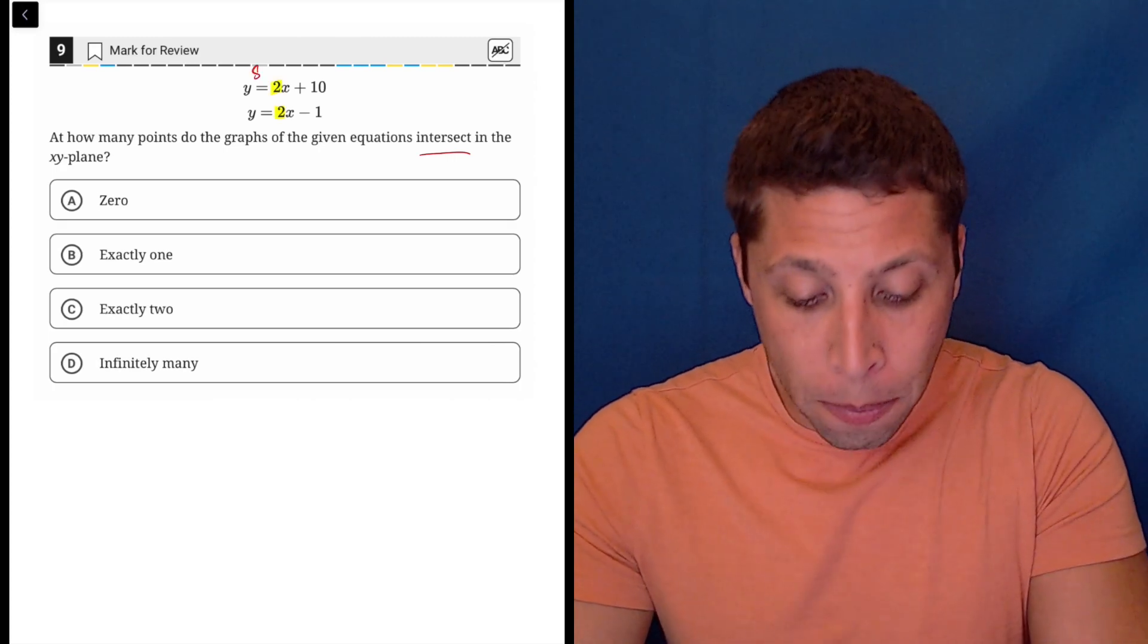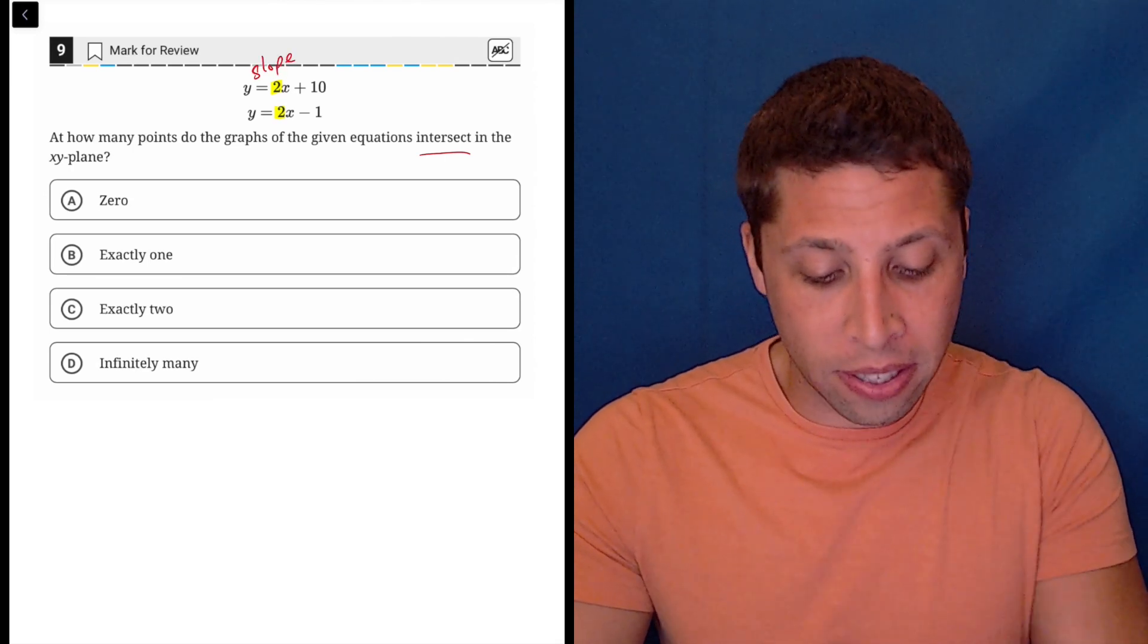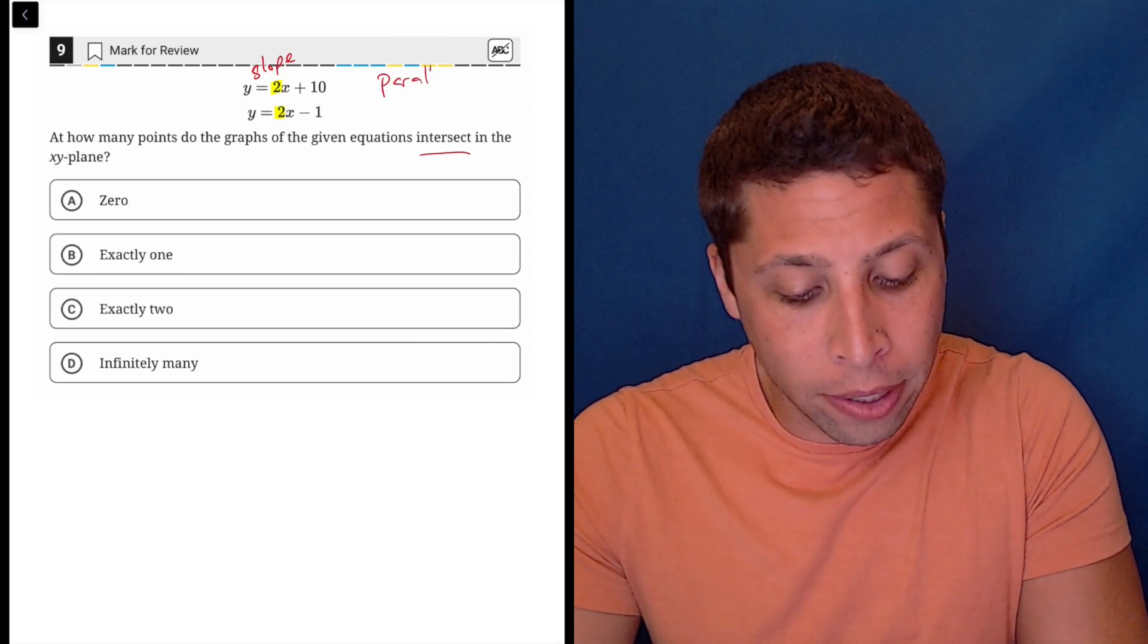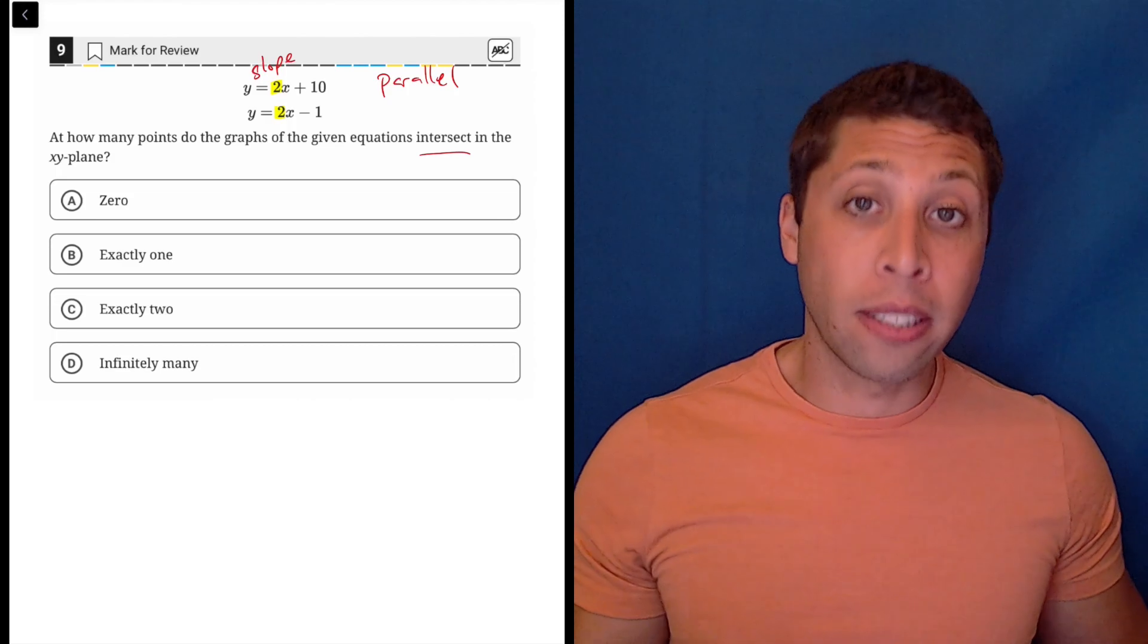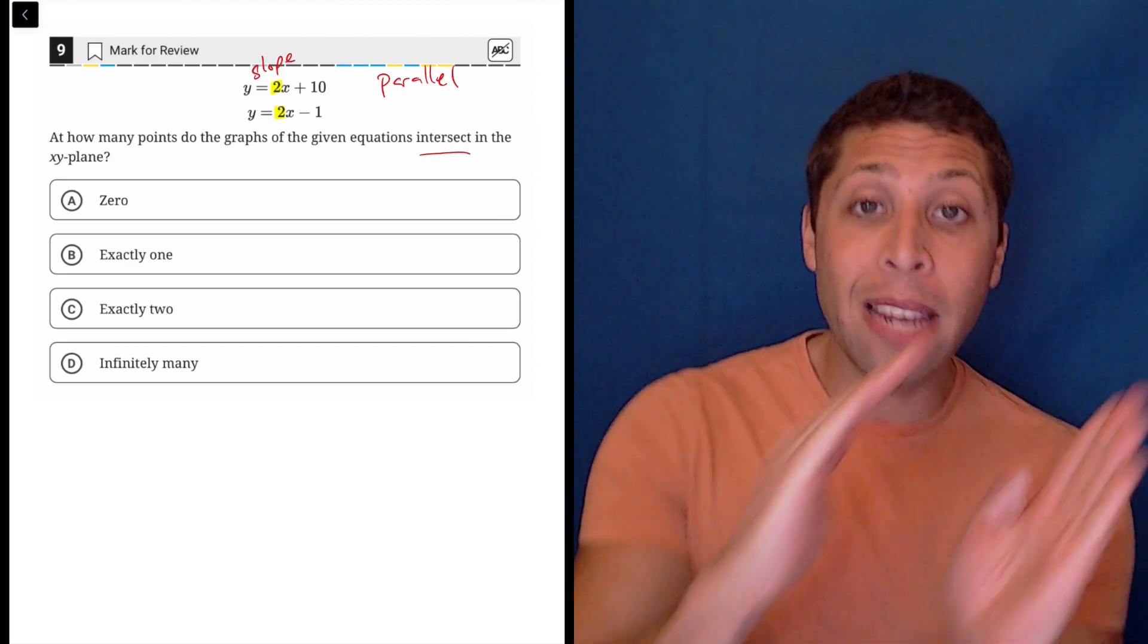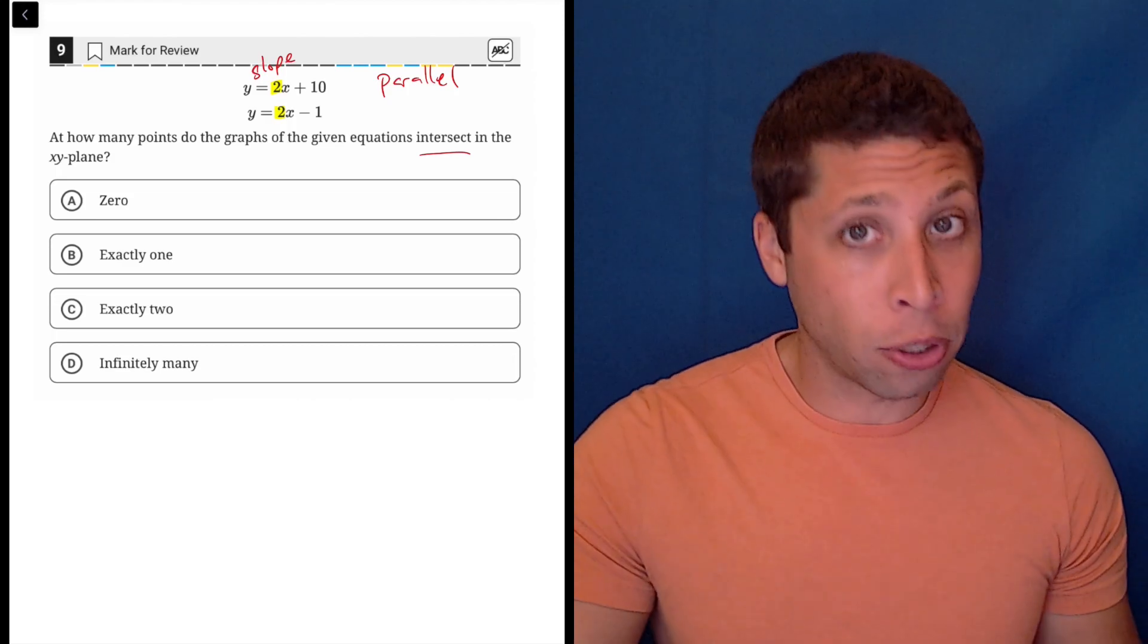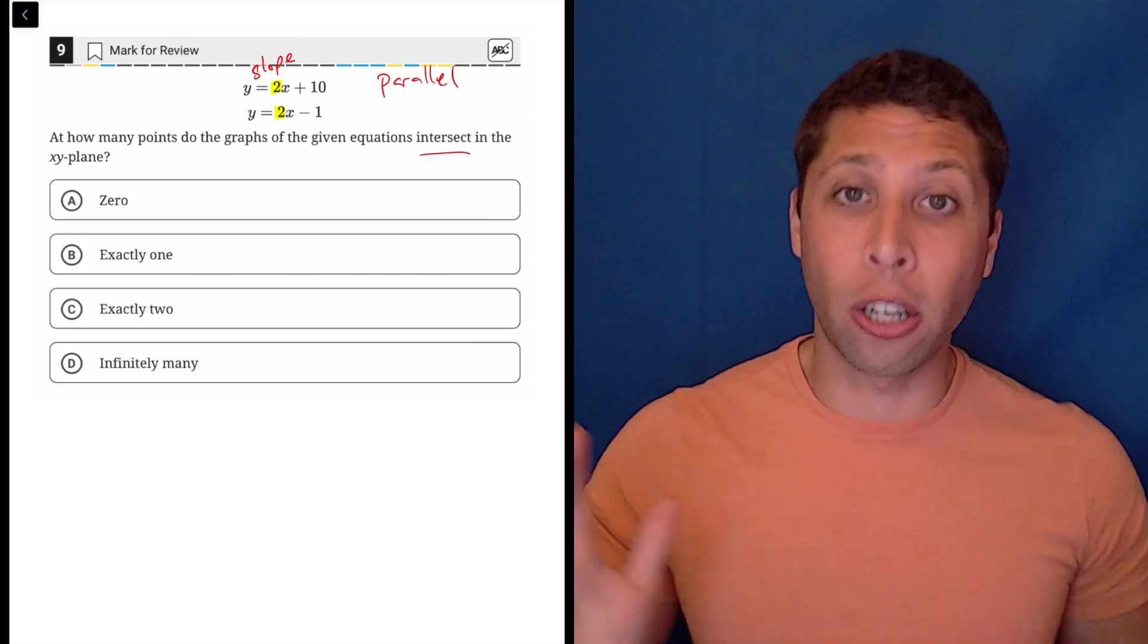The twos are the slope and when the slope is the same, the lines are parallel, which means that they travel in the same direction and if they go in the same direction,